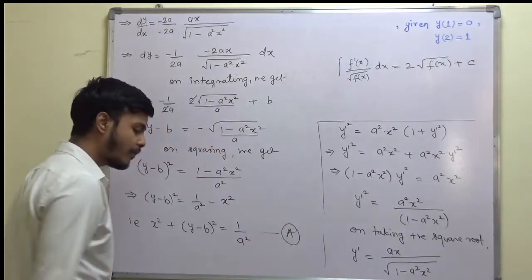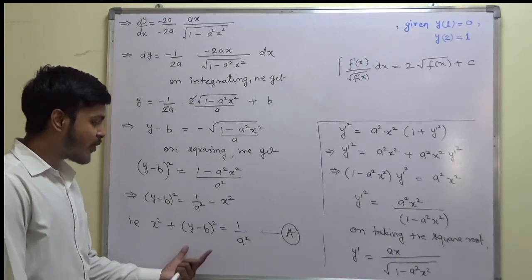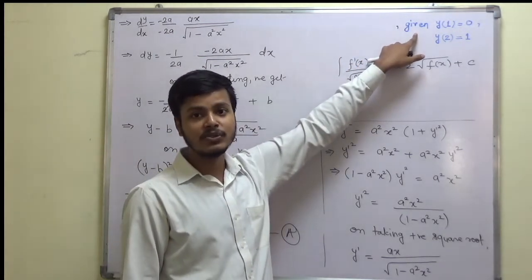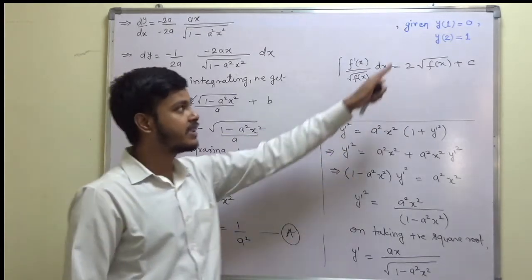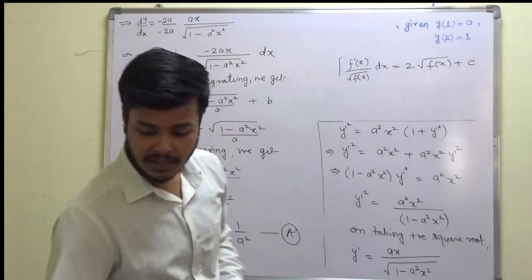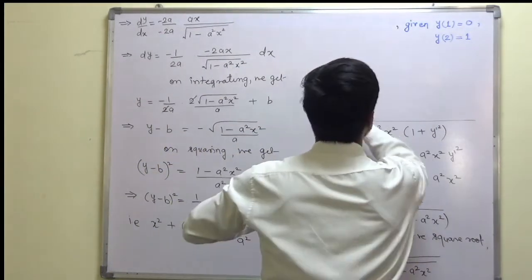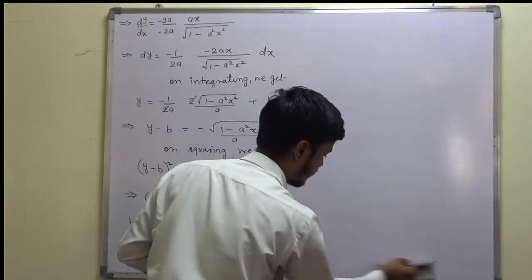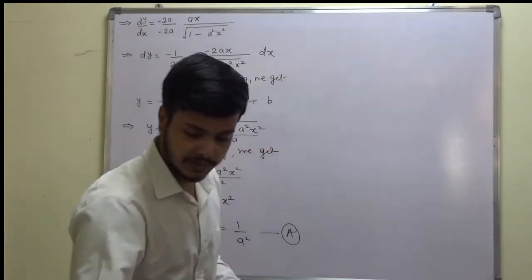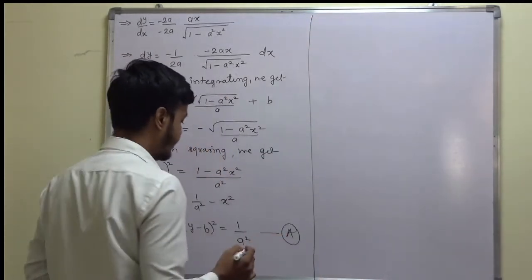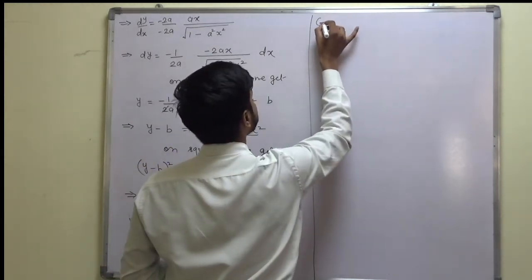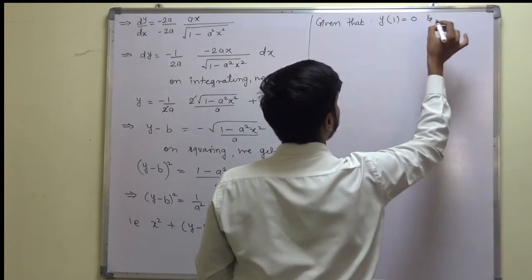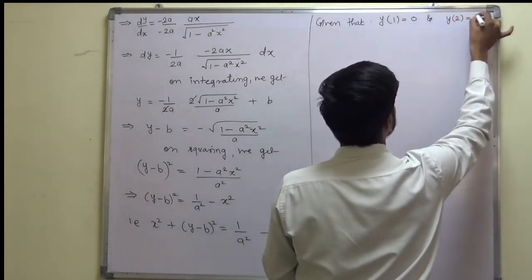This is our equation (A). Now we use the given boundary conditions to find the constants a and b. The conditions are y(1) = 0 and y(2) = 1.